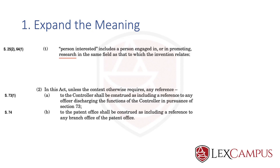The act also expands meaning in section 2 subsection 2: any reference to the controller shall be construed as including a reference to any officer discharging the functions of a controller — so the assistant controller, deputy controller, or any specifically appointed person discharging controller functions is treated as controller. Similarly, the patent office shall be construed as including a reference to any branch of the patent office. So the first use of definition is to expand the meaning.